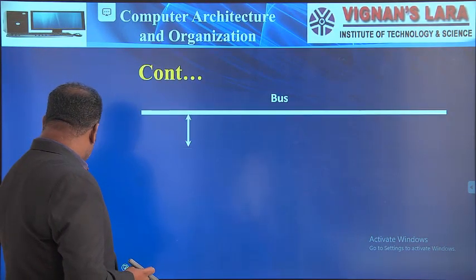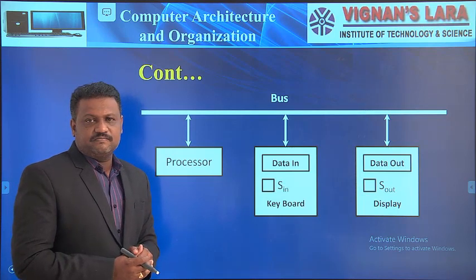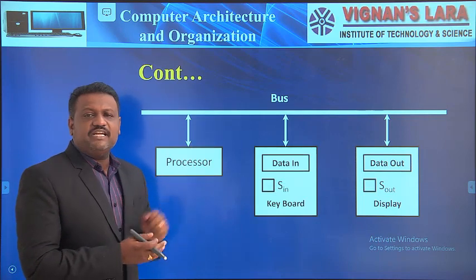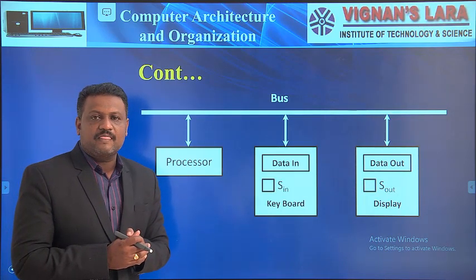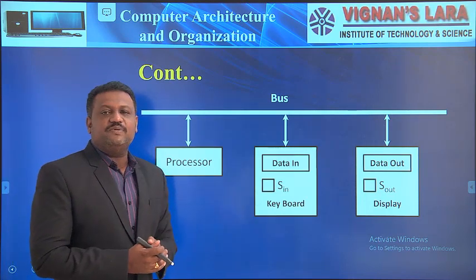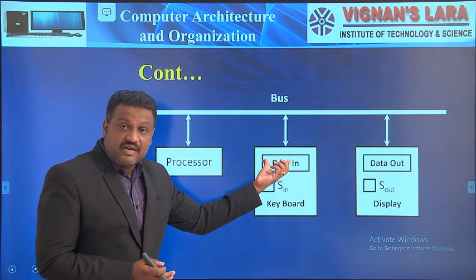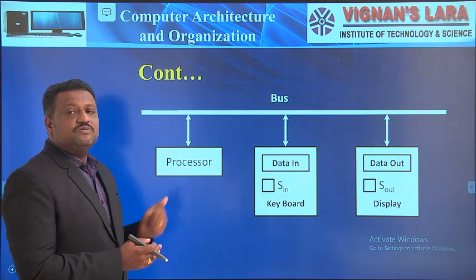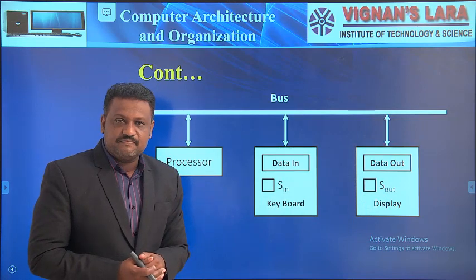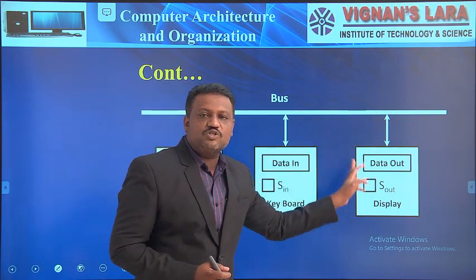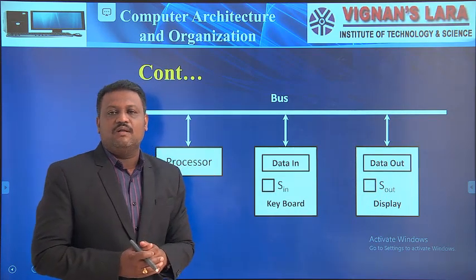To transfer data between a processor and I/O devices, we need a bus. Buses are nothing but a group of wires which carry information in physical form. Whenever the processor wants to access data from an input device like a keyboard, the data is first stored in the data-in register, then transferred to the processor. Once the data is in the processor register, the same data is sent to an output device — a display device — by first copying it to the data-out register present on the output device.